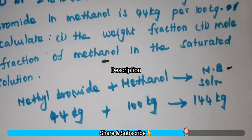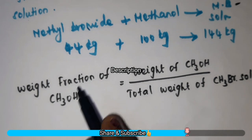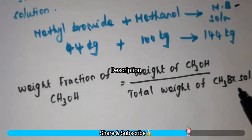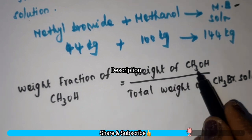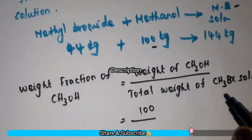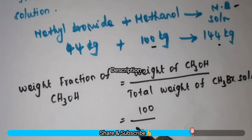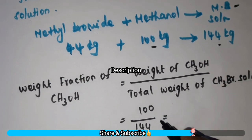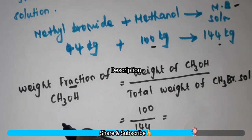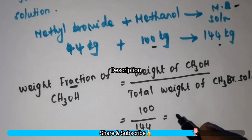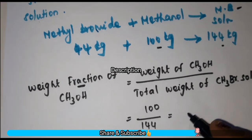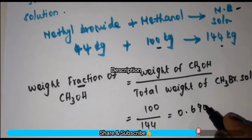First we will calculate the weight fraction of methanol. Weight fraction of methanol is weight of methanol divided by total weight of methyl bromide solution. Weight of methanol is 100 kg and total weight of solution is 144 kg. Here you should not multiply by 100, because we are calculating fraction — for percentage only you multiply by 100. That is the only difference between weight percentage and weight fraction. So, 100 divided by 144 is equal to 0.6944.